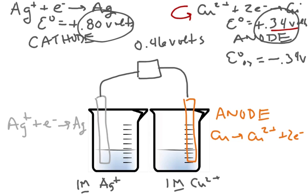If we hook this up as is, we're not going to see any voltage because this is not a complete circuit. We're going to add in one more piece called a salt bridge.